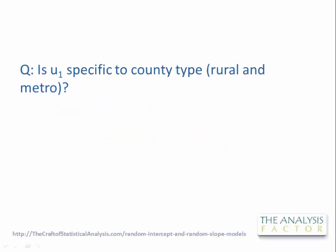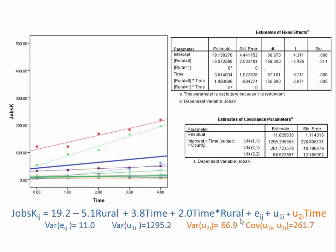Here's a question from Erin: Is U1 specific to county type — rural and metro? To answer this we're going to have to look at the slide. The U1 that Erin is referring to is this part of the model. It is the term that represents the random intercept, and yes Erin, to some extent U1 matters in that it's the distance at time equals zero — it's the distance between each county's trajectory and the appropriate line.